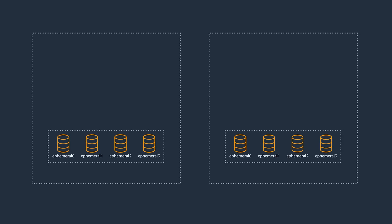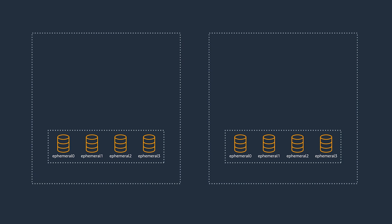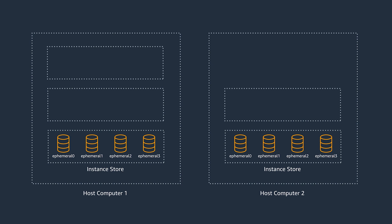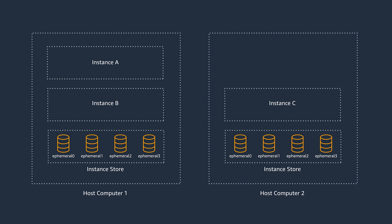Let us familiarize ourselves on the ephemeral storage and EBS storage in EC2s. Ephemeral storage in an Amazon EC2 is nothing but the instance store that provides block storage across many EC2 instance types. This storage is pre-configured and pre-attached to the same physical server that hosts the EC2.